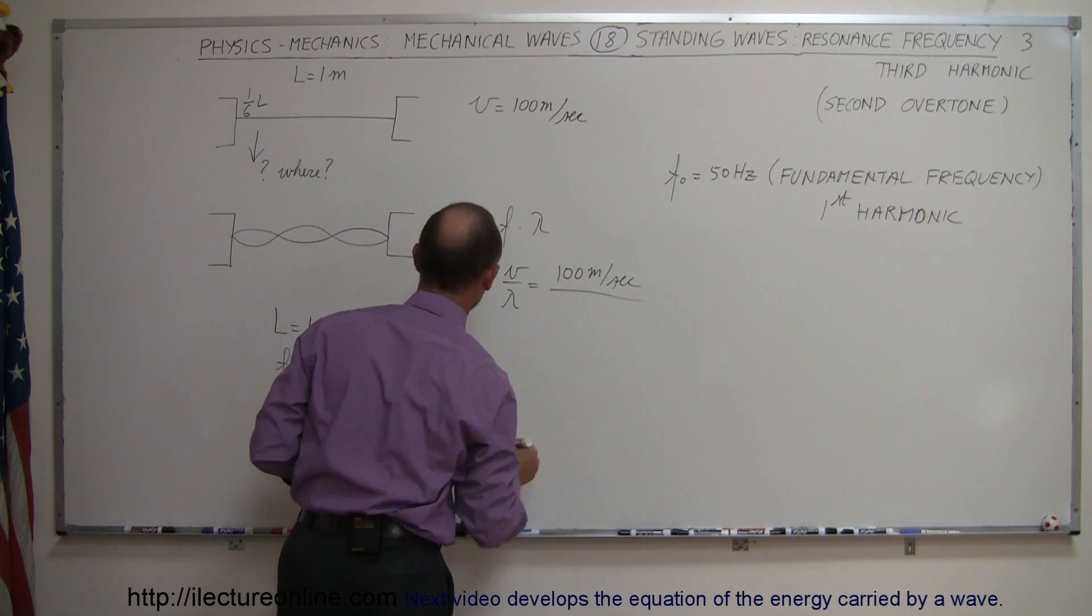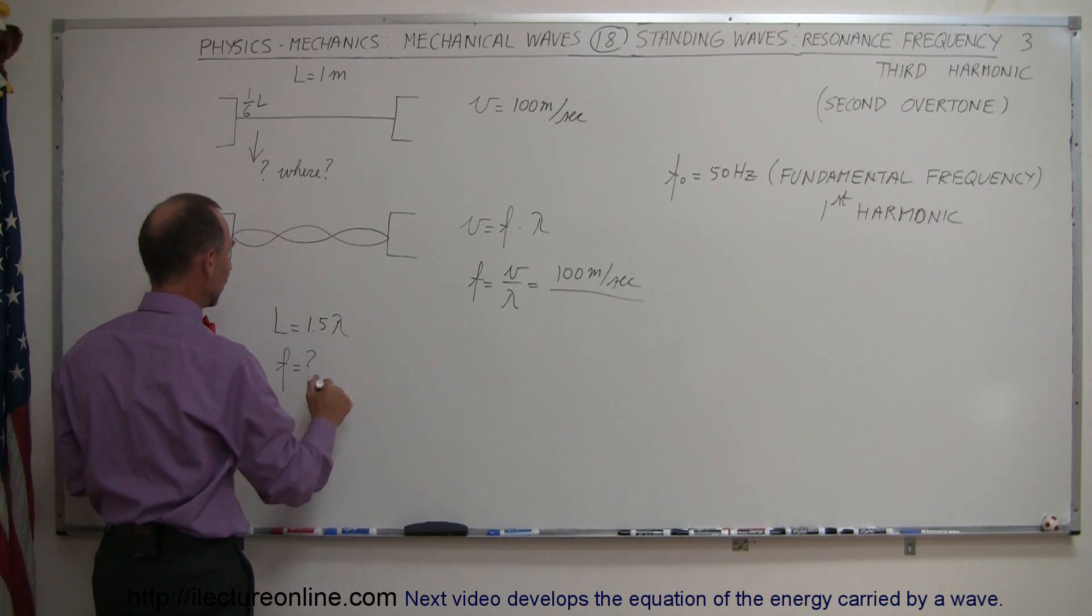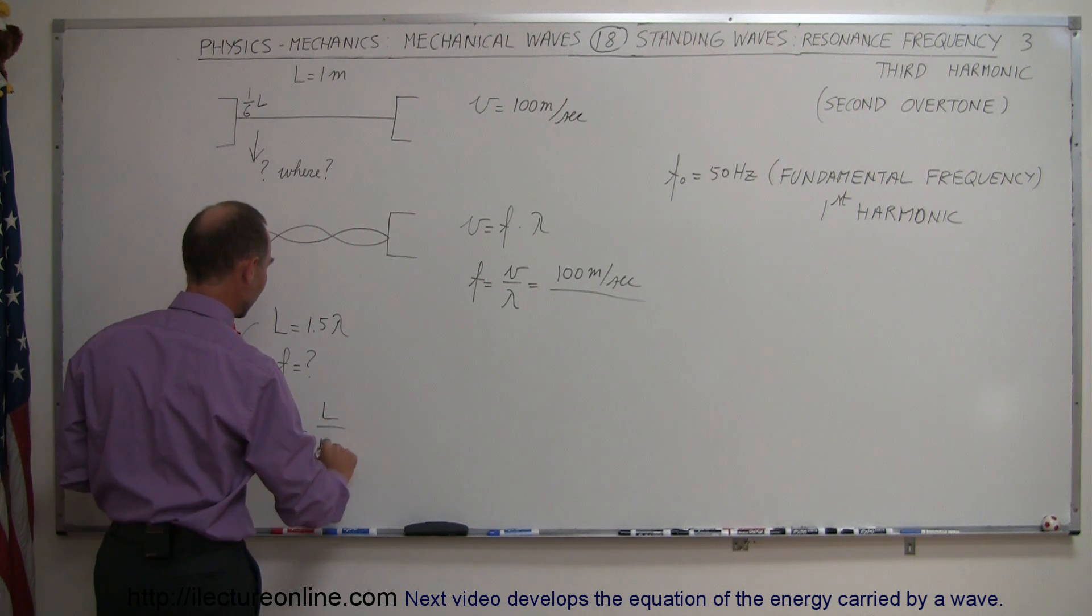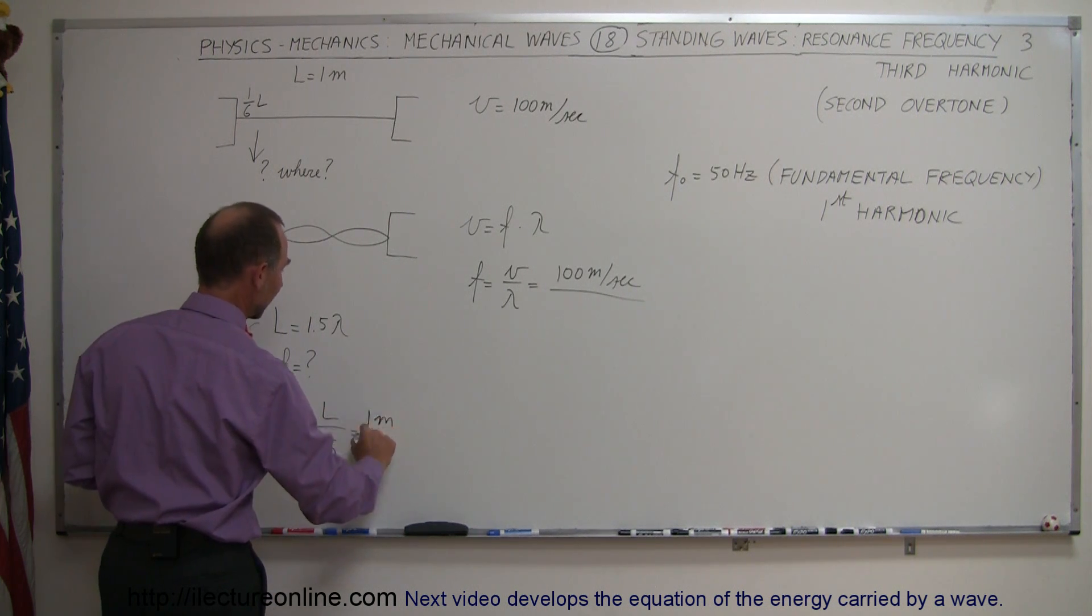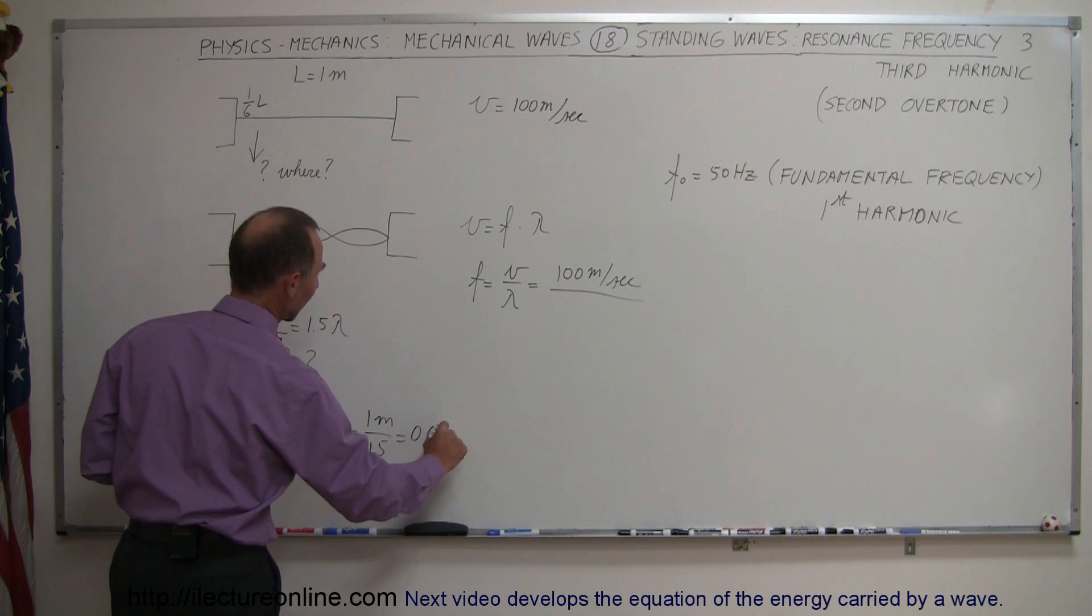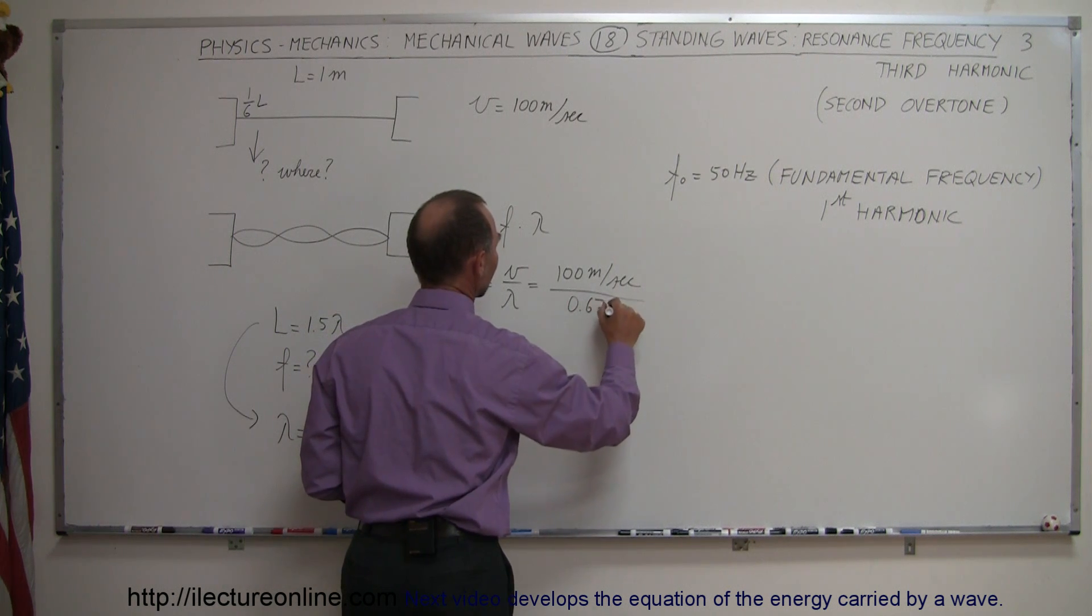It's the wavelength that keeps changing. Now notice the length is one and a half lambda, which means from this we can then conclude that lambda is equal to L divided by 1.5, which is 1 meter divided by 1.5, which is equal to 0.67 meters.